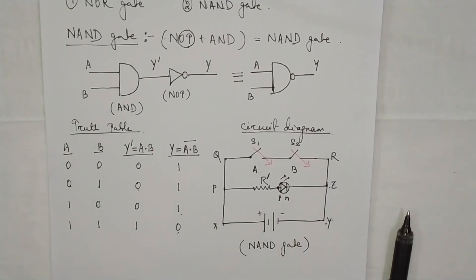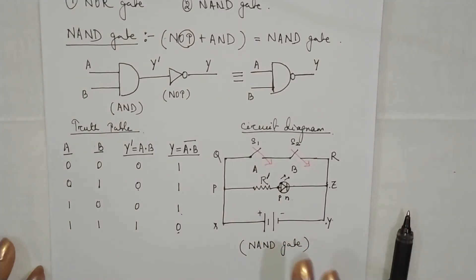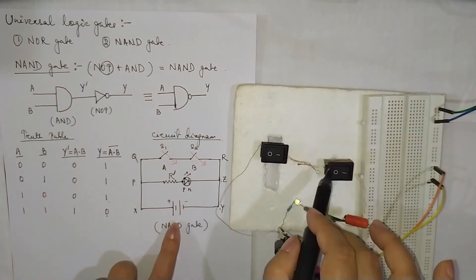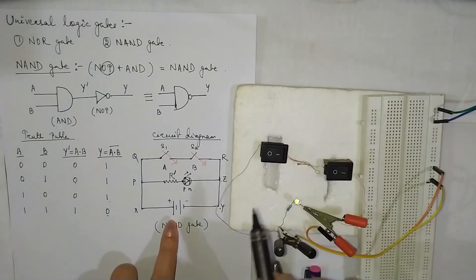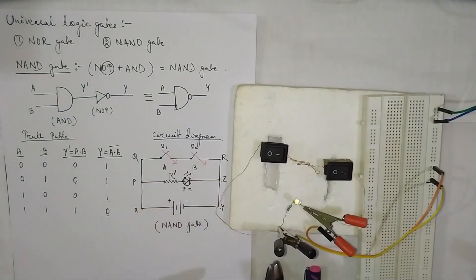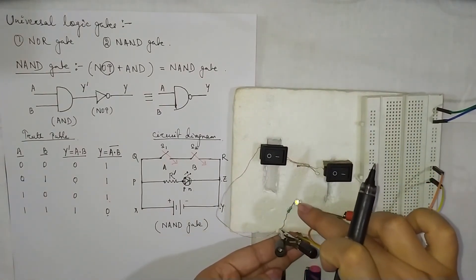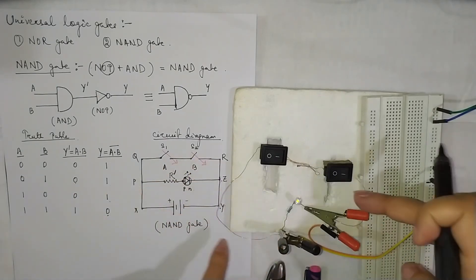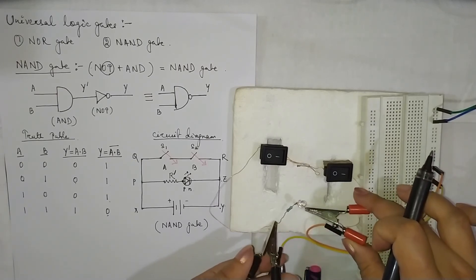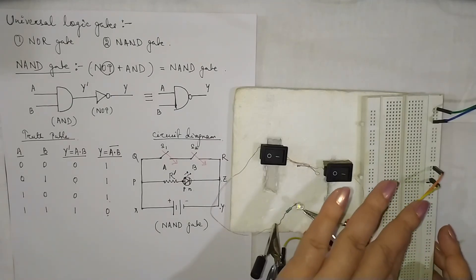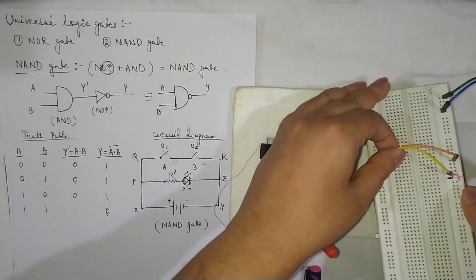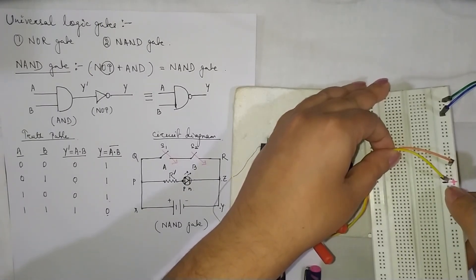Now let us set up the circuit and do the arrangement. Here is the setup. These are my two switches connected in series. I have taken a resistor and an LED connected in parallel across the switches. This is the P side and this is the N side of the LED. In this breadboard arrangement, the orange wire is positive — the upper line — and the yellow wire is the negative — the lower line.